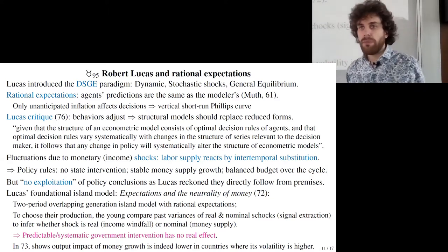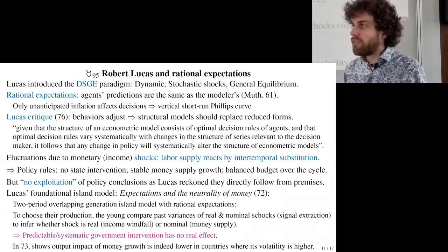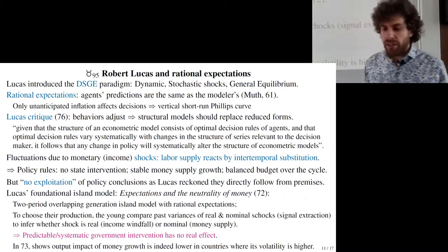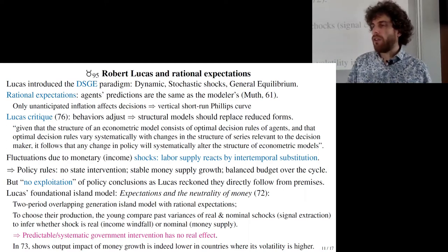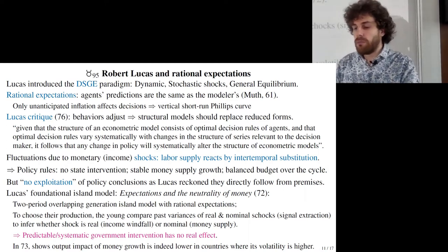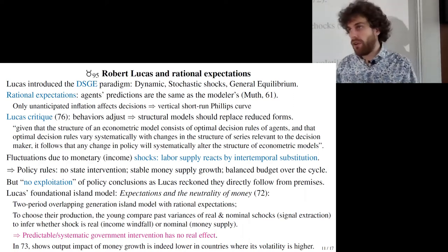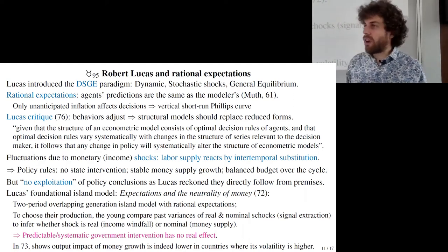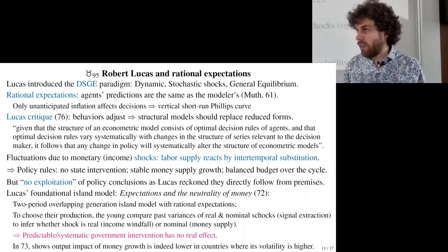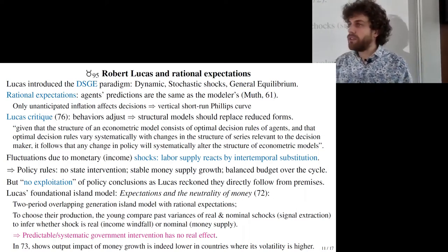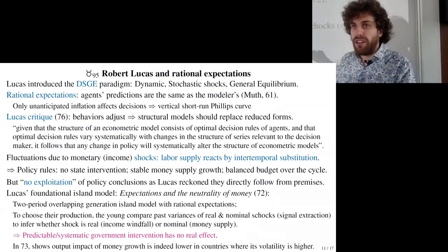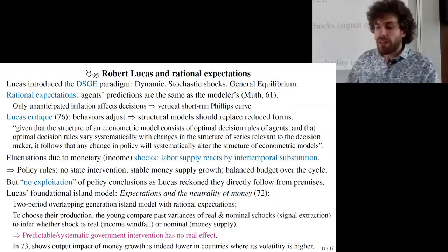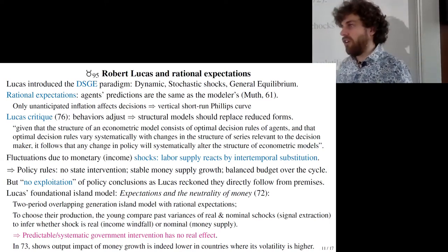The year after, Lucas claimed there is empirical support for this model. He compared, across different countries, the impact of monetary policy — growth in the money supply — on real behavior. He showed that in countries with more volatility in the money supply, meaning countries where the central bank uses more monetary policy, people react less to it — there is less variability in output due to money supply growth in those countries — which supports his model.